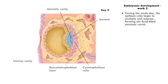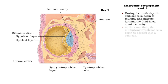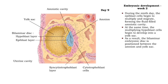During the ninth day, the epiblast cells multiply and migrate, forming the fluid-filled amniotic cavity. At the same time, the multiplying hypoblast cells begin to develop into a yolk sac. As a result, the bilaminar embryonic disc is positioned between the amnion and yolk sac.